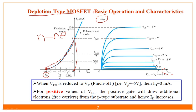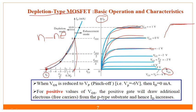The output characteristics show ID versus VDS. As VDS increases, more current flows — increasing, increasing — until it becomes flat. That flat line indicates saturation: after saturation voltage, current does not increase further but remains constant. This is the saturation region of the depletion type MOSFET.